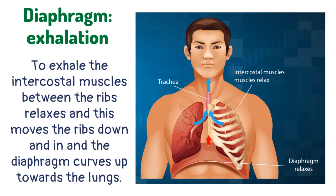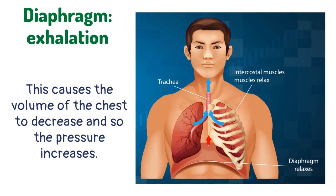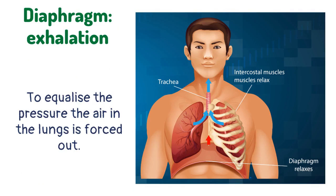To exhale, the intercostal muscles between the ribs relax and this moves the ribs down and in, and the diaphragm curves up towards the lungs. This causes the volume of the chest to decrease and so the pressure increases. To equalize the pressure, the air in the lungs is forced out.